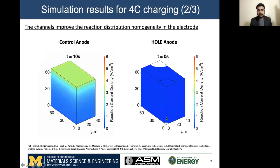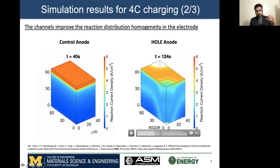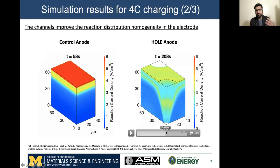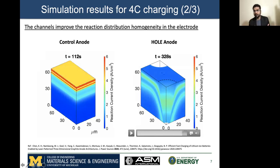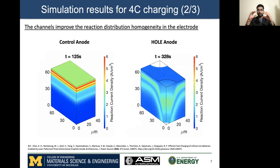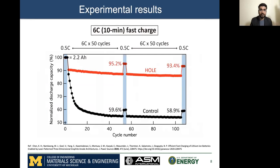But when we look at the hole anode, what we observe is that the reaction distribution is much more homogeneous throughout the anode volume. Hence, not only do we improve the utilization of the entire electrode, but we also reduce the likelihood of lithium plating at the top. We validated this with experimental results where we made industrially relevant pouch cells with industrially relevant loading of greater than 3 milliamps per centimeter square.